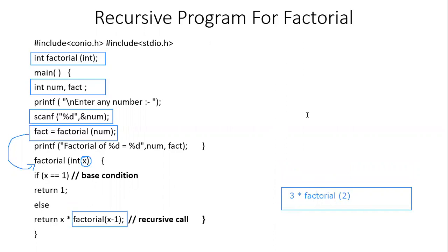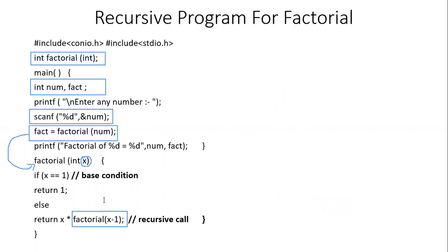We remove the stack entry, evaluate it, and the answer comes out to be 2. Then we pick up the next top entry: 3 * factorial(2). We already know factorial(2) = 2, so remove this entry — the final answer is 6. This answer is returned to the function call statement, so variable fact = 6. We display: factorial of 3 is 6. Similarly we can find factorial of 4, 5, and 6.